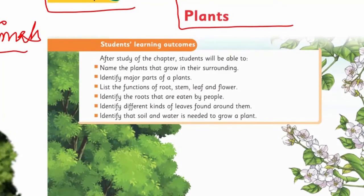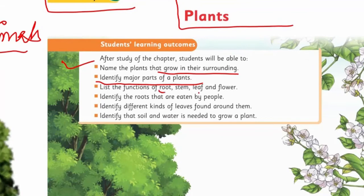Let's have a glance at the student learning outcomes of the chapter. Number one: name the plants that grow in their surroundings. You will list the plants that grow in your surroundings. Number two: identify major parts of plants. Today we will study the major parts of plants. Number three: list the functions of root, stem, leaf and flower. Today we will learn about the functions of root, stem, leaf and flower—what role they play in the plant and what work they do.